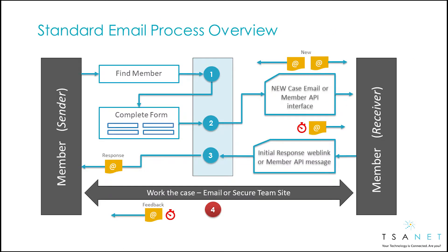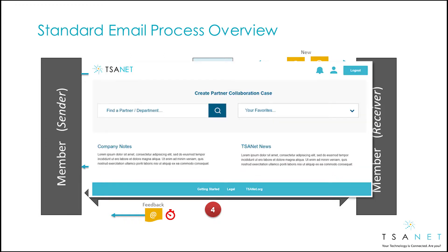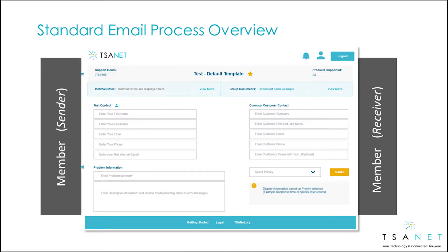Let's take a look at the end-to-end process to better understand how TSAnet Connect works. First, the sender logs into TSAnet Connect and finds a partner. They fill out their process form, select a priority, and hit Submit.